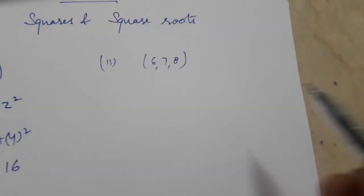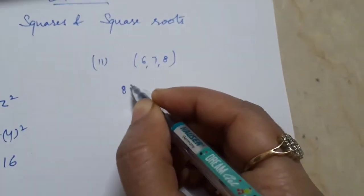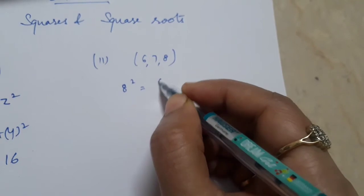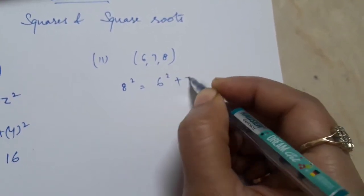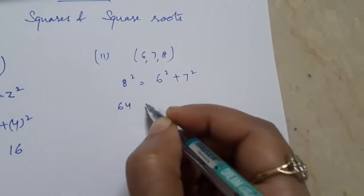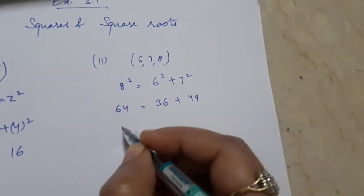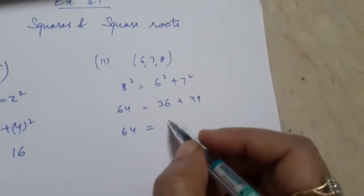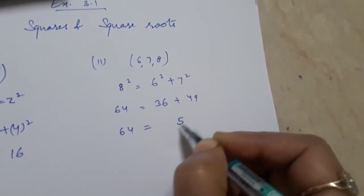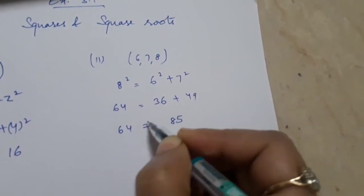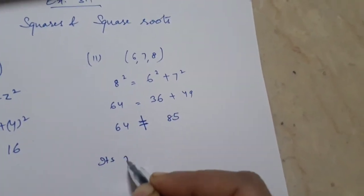In the second option, the biggest number is 8, so we check whether 8² equals 6² + 7². 8² = 64, 6² = 36, and 7² = 49. The addition of 36 and 49 is 85, which is not equal to 64. So it's not a Pythagorean triplet.